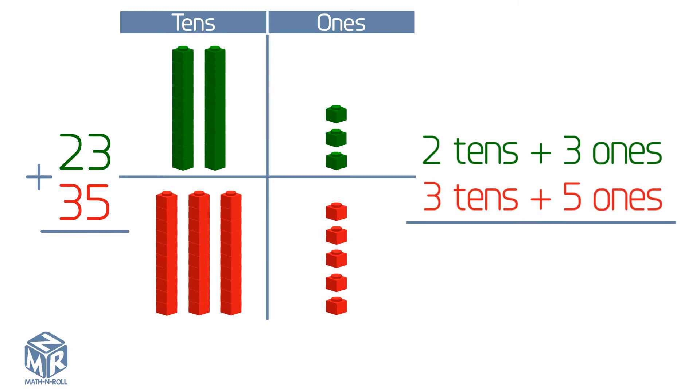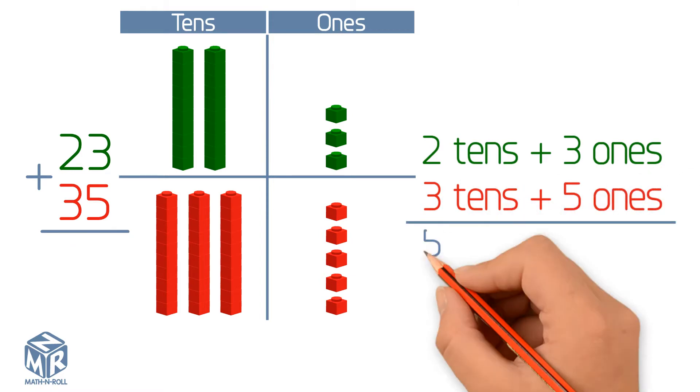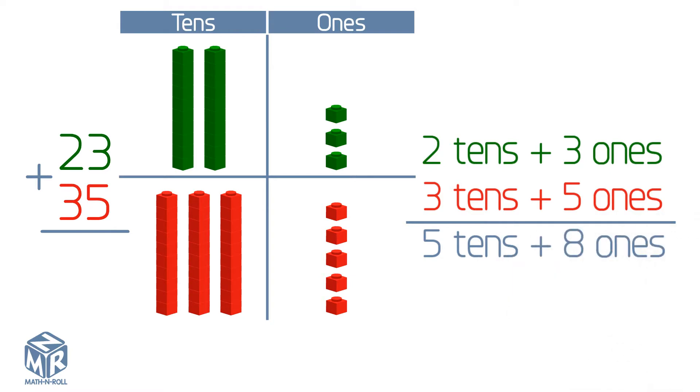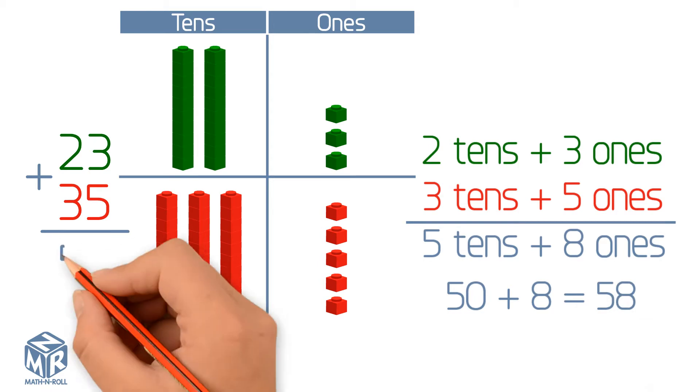Let's add them together. We get five tens and eight ones, or 50 plus 8, which equals 58. So 23 plus 35 equals 58.